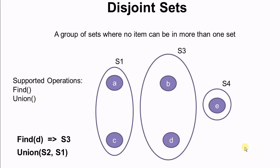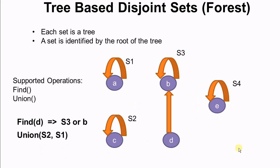The next question to consider is: how do we implement a disjoint set? There are different ways to implement disjoint sets. The most commonly used is tree-based disjoint sets, also called a disjoint set forest.